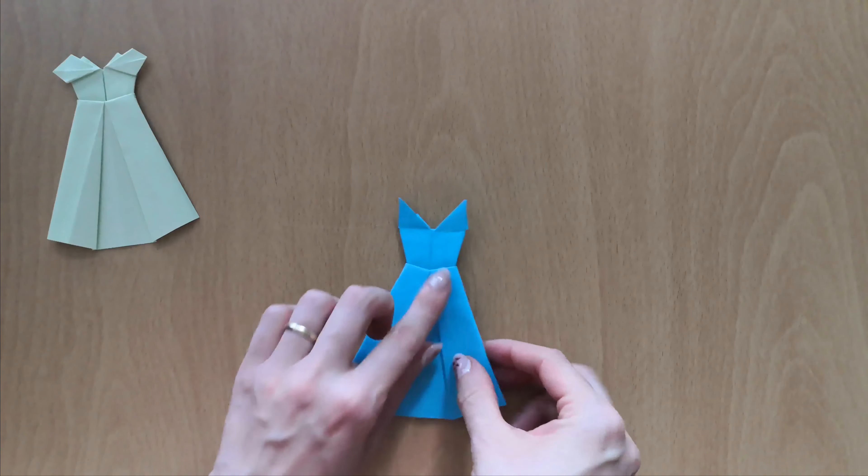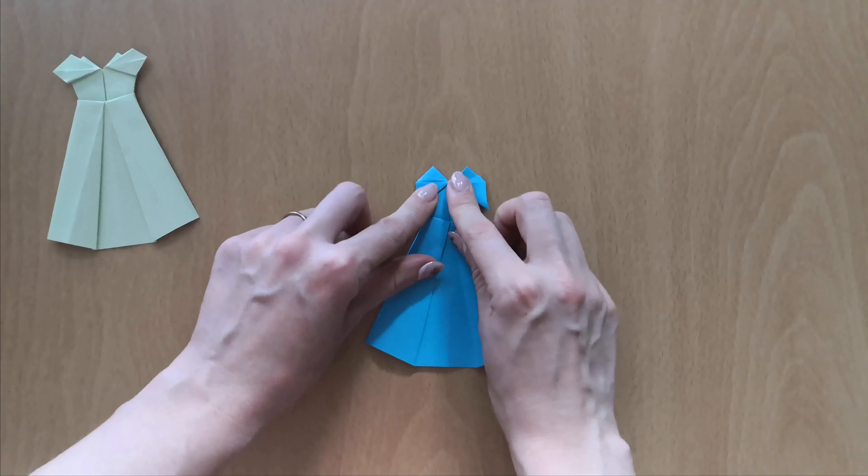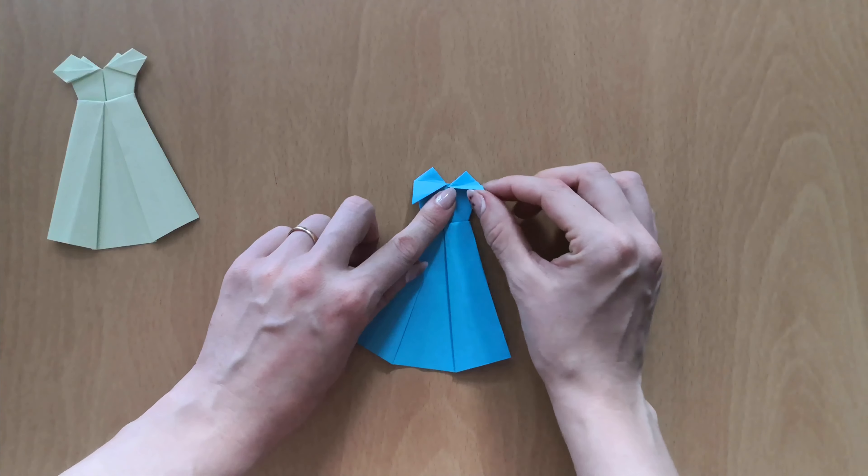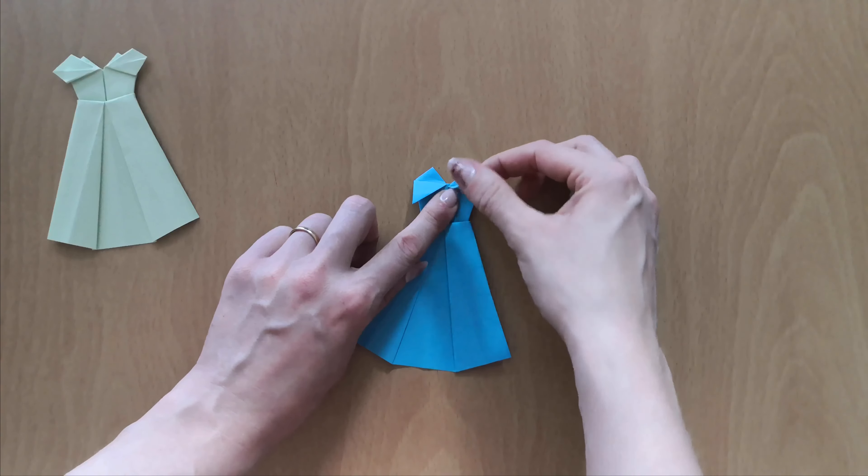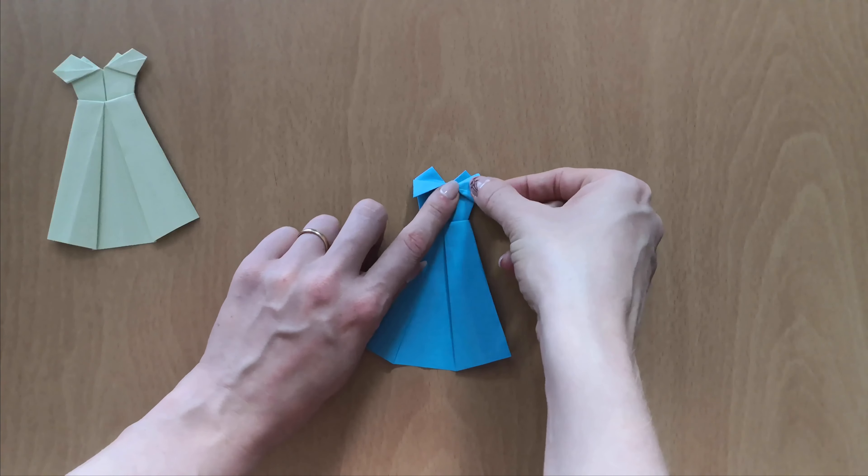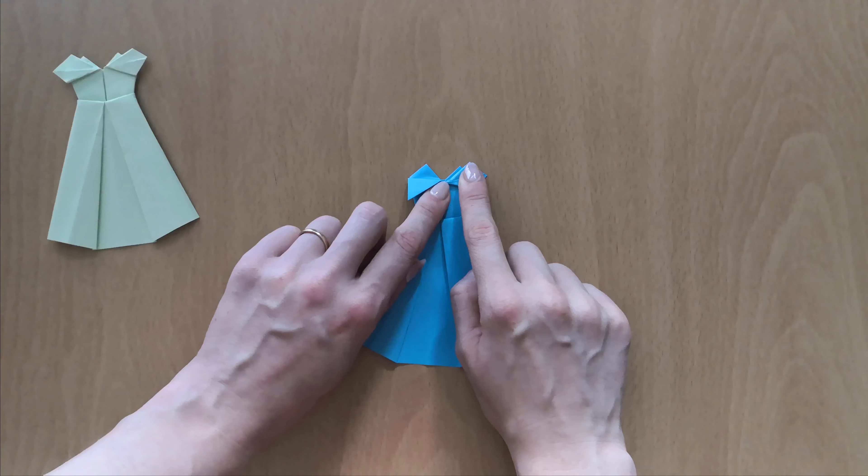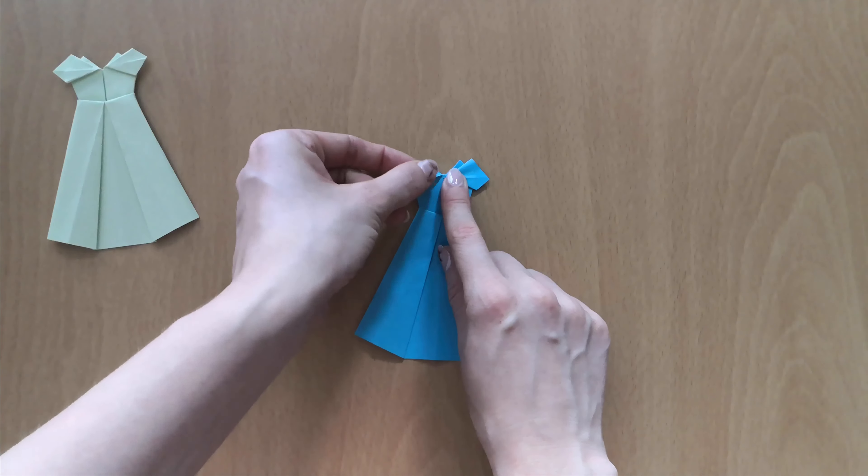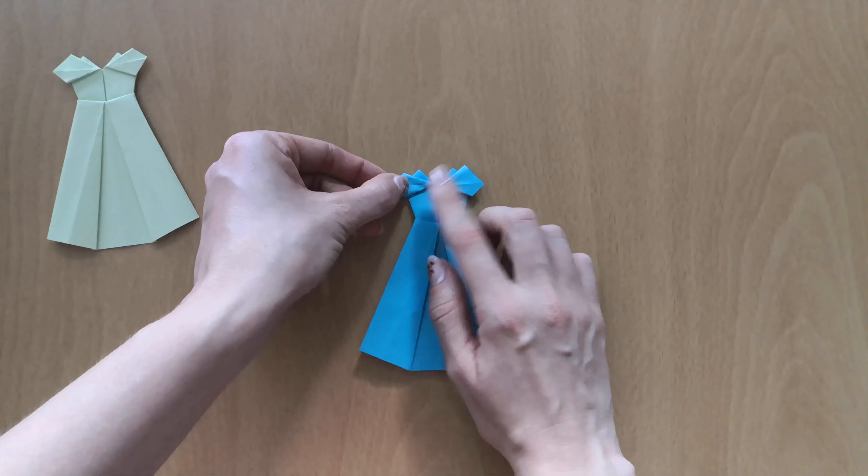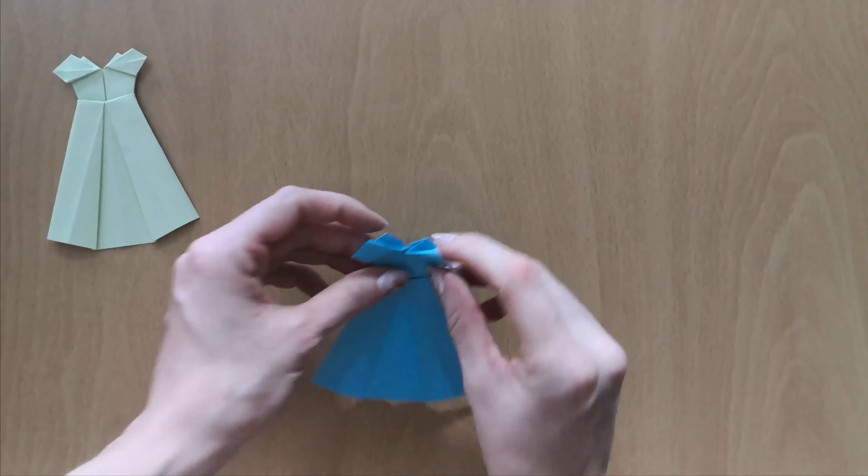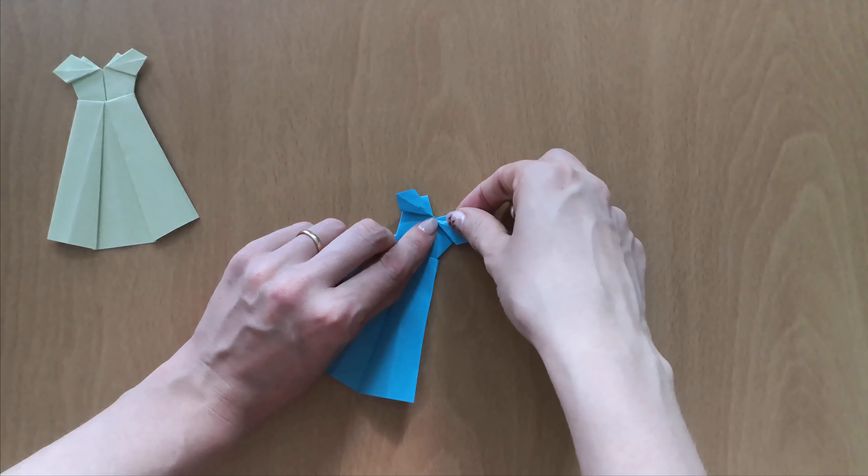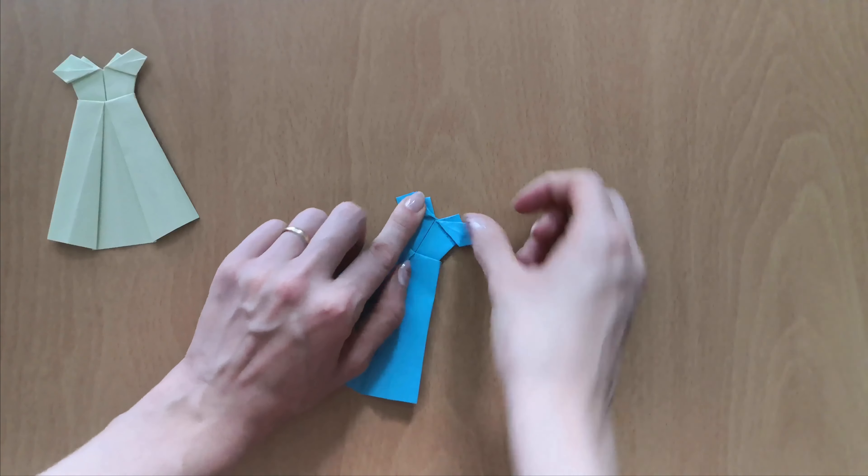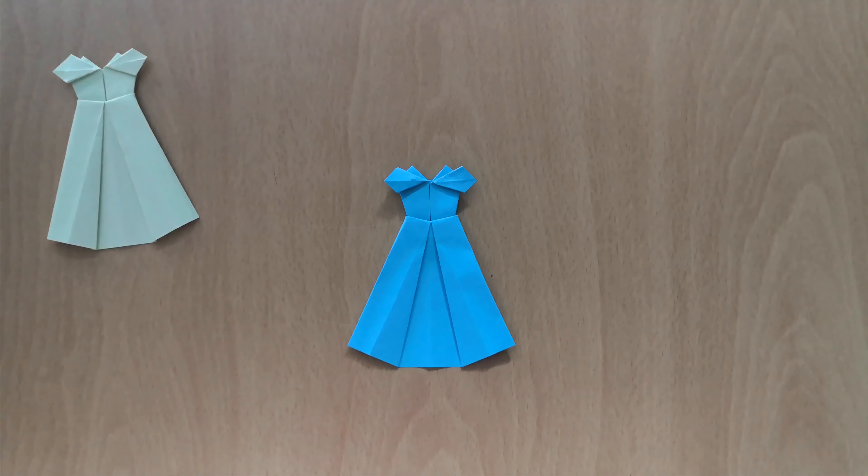And now just turn your paper around. Bring those two triangles downwards and open the pocket right here in the middle. So place your finger in it, open it, and just press it down. And the same on the other side. So just open this pocket. And you've made your origami princess dress.